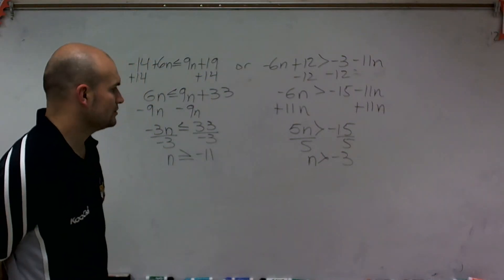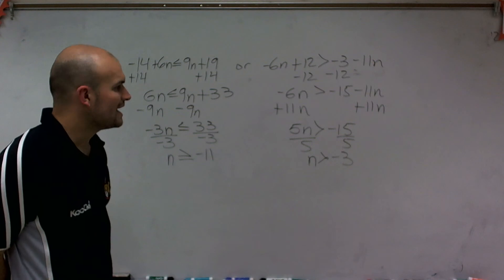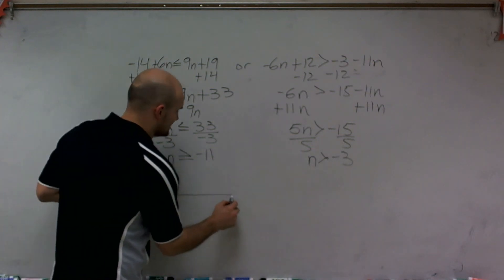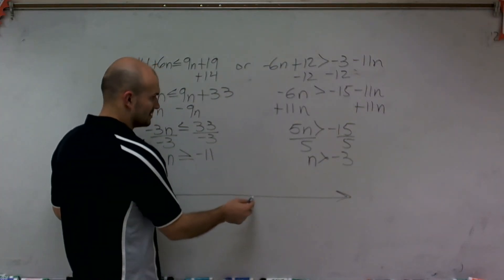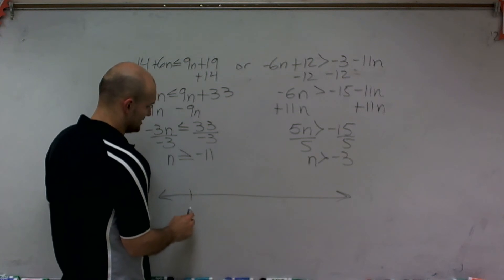So what you're looking at is you have n is greater than negative 11, or n is greater than negative 3. So in graphing these, all right, let's start with, let's have this be negative, let's do negative 10s right here.